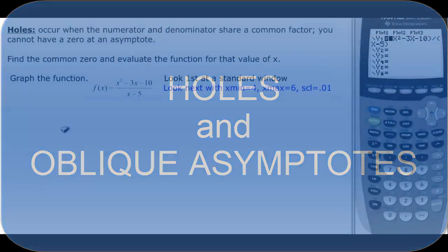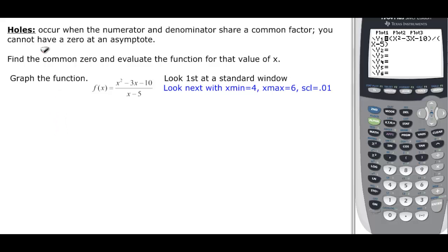This video will talk about holes and oblique asymptotes in rational functions. So a hole occurs when you have a common factor between your numerator and your denominator. The zeros of the denominator are usually asymptotes and you can't have a zero there because it can't reach that value, so we have a problem and it is actually a hole there.